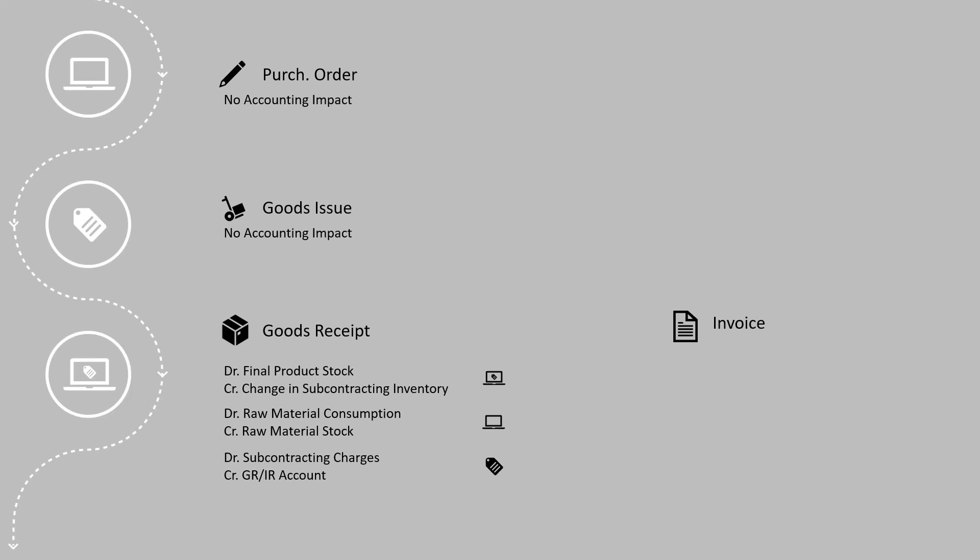After this, we will receive the invoice from the vendor and the invoice posting is normal like any other P2P purchase order, where we debit the GRIR account and credit the vendor account. This is a typical and simple subcontracting process in SAP.